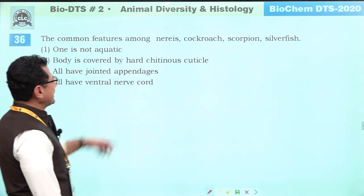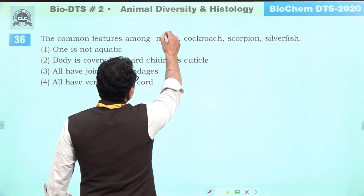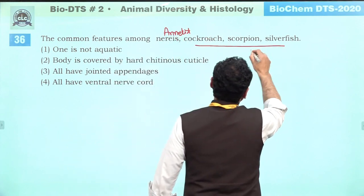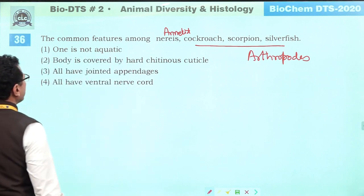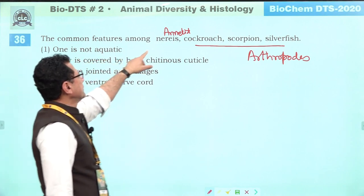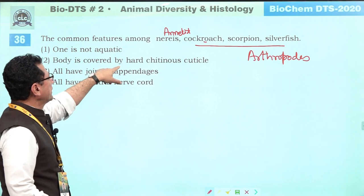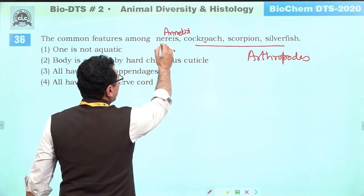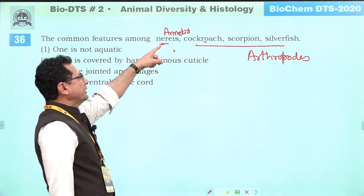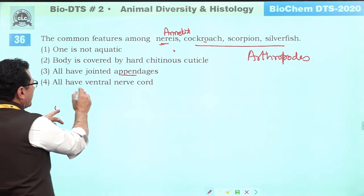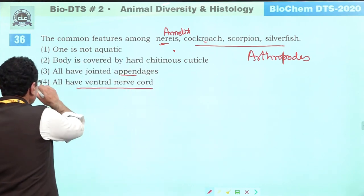Common feature among Nereis (annelid), cockroach, scorpion, and silverfish (arthropods): Not all aquatic. Body covered by hard chitinous cuticle — hard cuticle is not present in Nereis. Jointed appendages — not present in Nereis. They all have ventral nerve cord. Invertebrates' nerve cord is located on the ventral side of the body. So answer is four: all have ventral nerve cord.